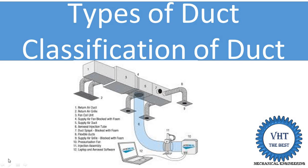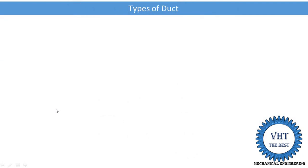Hi, welcome to my YouTube channel. In this video I discuss the types of duct, or classification of the duct. First, what is the duct? A duct is a passage or space from where we supply cool air from the air conditioning unit to the various rooms.